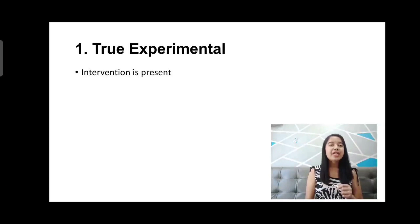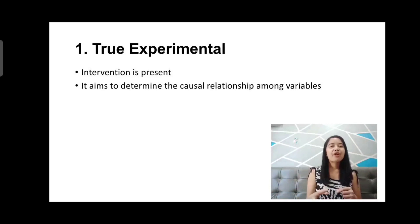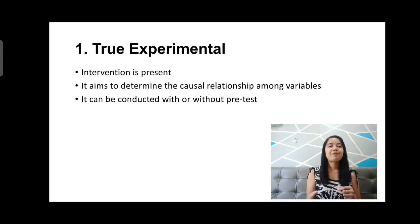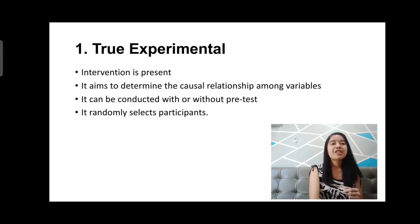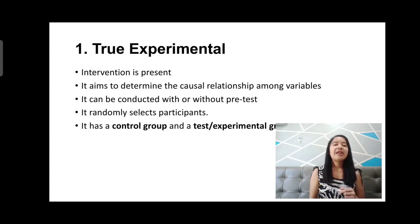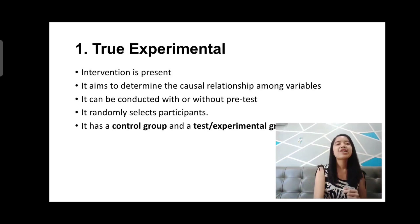In true experimental research, an intervention program is always present. It aims to determine the causal relationship among variables — checking if the intervention has a positive, negative, or neutral effect on participants. Another feature is that it can be conducted with or without a pre-test. True experimental research also randomly selects participants, meaning we are not purposively choosing respondents. It also has a control group and a test or experimental group, dividing participants into two different groups.